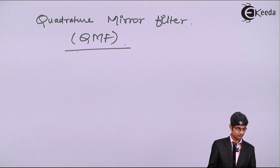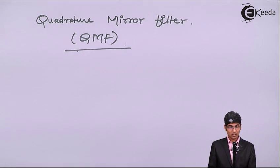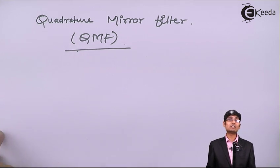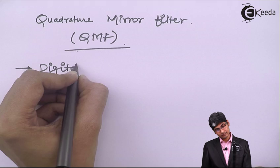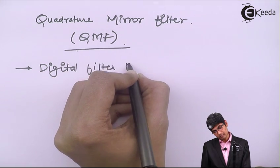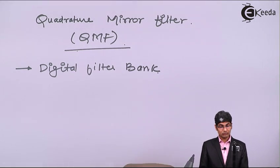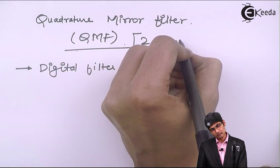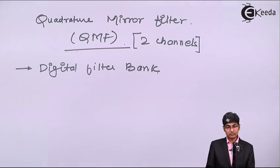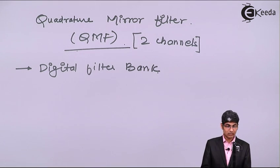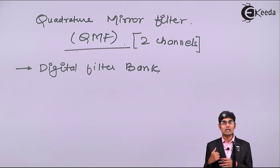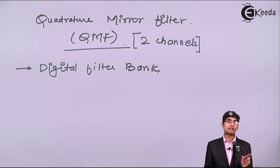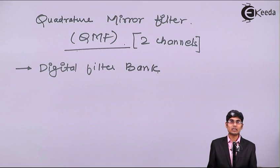This filter is actually very efficient and hence we use it. This filter uses a digital filter bank. As we are dealing with two channels, there will be two channels or two separate pathways for the signal to pass. We have two types: an analysis filter bank and a synthesis filter bank, and we use both together to form a quadrature mirror filter.